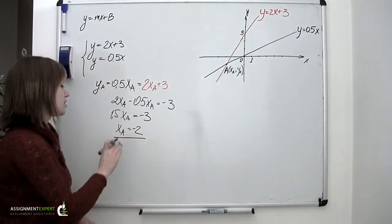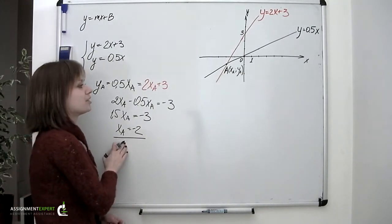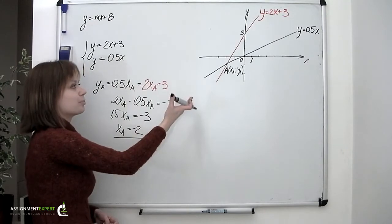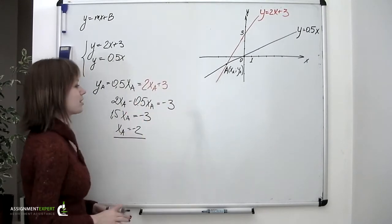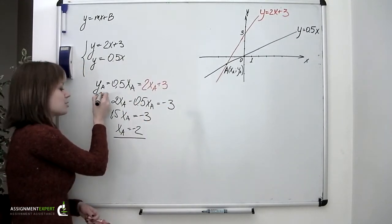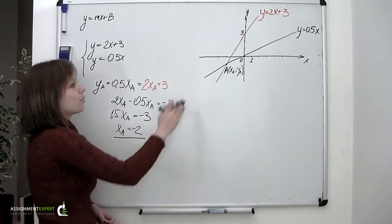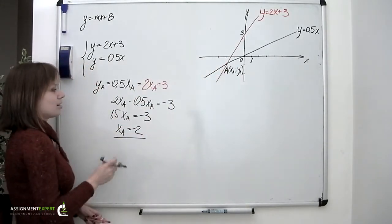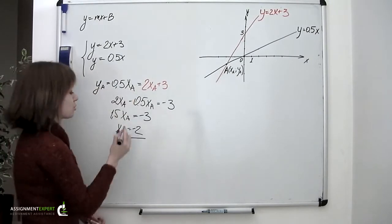And this is the x coordinate of an intersection point for these two lines. Now to define the y coordinates, we should substitute this x coordinate into one of the given equations. Let's choose the first one.